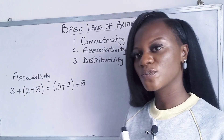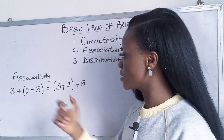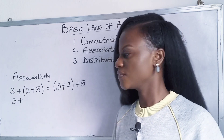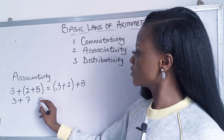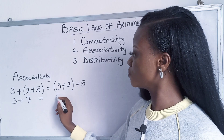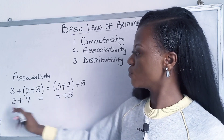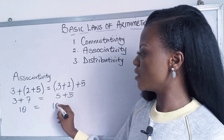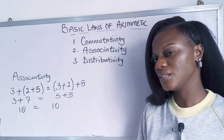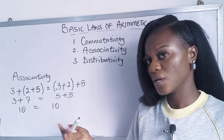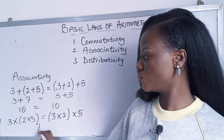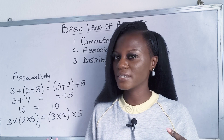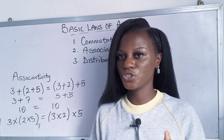Let's solve both sides and see if we get the same answer. Using order of operations — brackets first — 3 plus (2 plus 5) gives 3 plus 7, which is 10. And (3 plus 2) plus 5 gives 5 plus 5, which is also 10. So associativity holds under addition. Now try multiplication at home and see if you get the same answer on both the left and right hand sides.